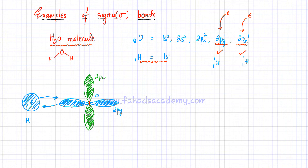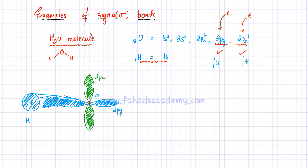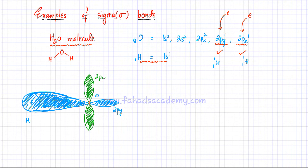Hydrogen needs one electron as well, so it's going to try and attract the oxygen atom's electron towards itself, and they're both going to try and attract the electrons. What would eventually happen is that the two electrons — one being attracted by oxygen and the other by hydrogen — are going to get stuck in the middle because both oxygen and hydrogen nuclei are trying to pull those electrons towards themselves. So the two electrons would get stuck somewhere in the middle and they're going to end up forming a sigma bond, where the region of maximum electron density would lie right in the middle.